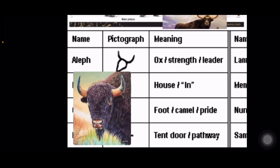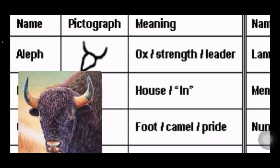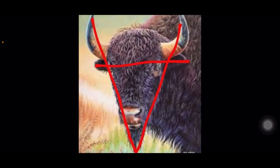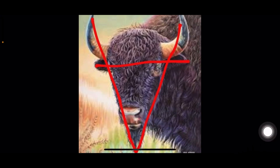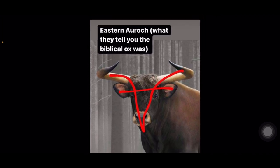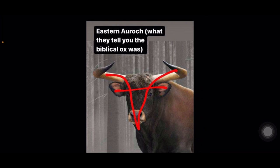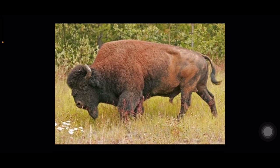I'll let you guys be the judge. As you can see, the pictograph Hebrew — who doesn't match? Does that look like an auroch or does it look like a buffalo? One thing to notice about the buffalo is the bottom of his head; he has hairs at the bottom of his chin which makes his head look more pointy at the base, adding to the aleph shape. But when we look at the eastern auroch — which they tell you is the biblical ox — he doesn't have anything under his chin, and neither do his horns protrude directly upward.